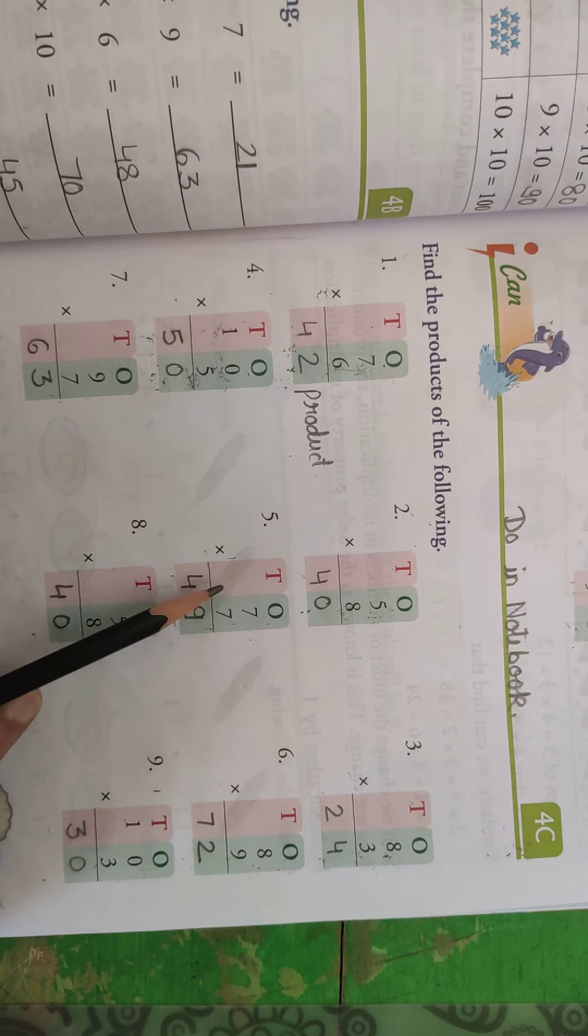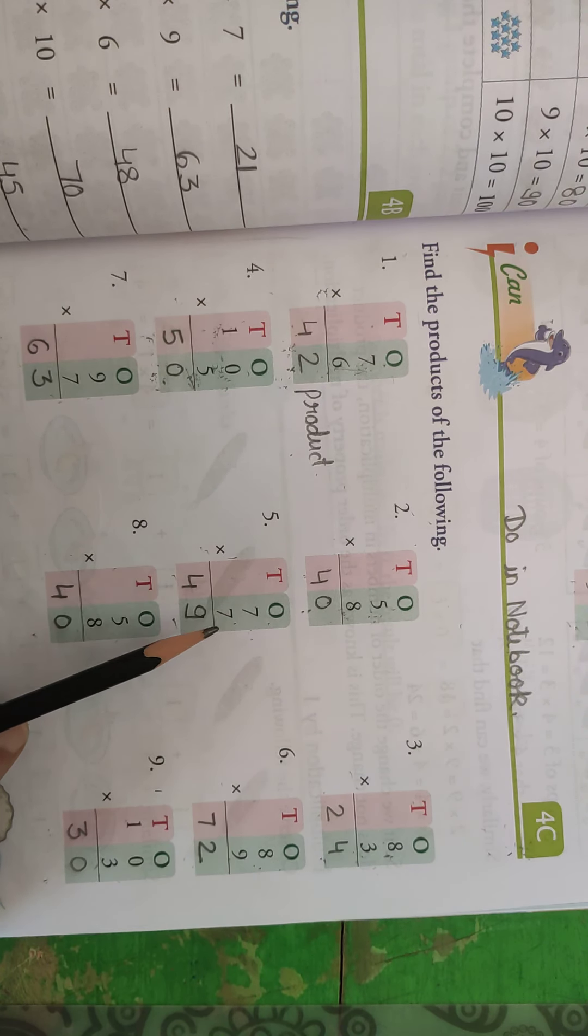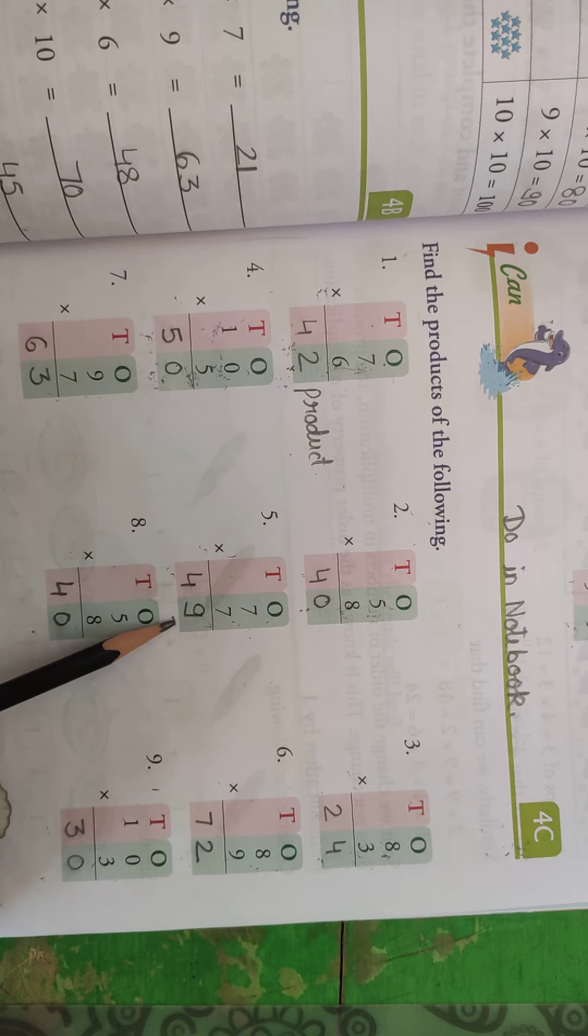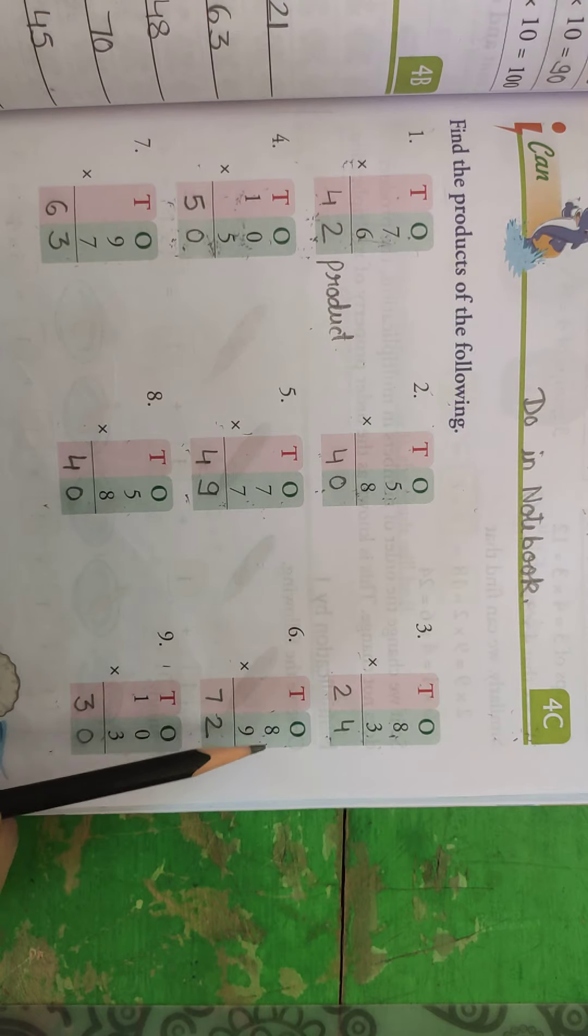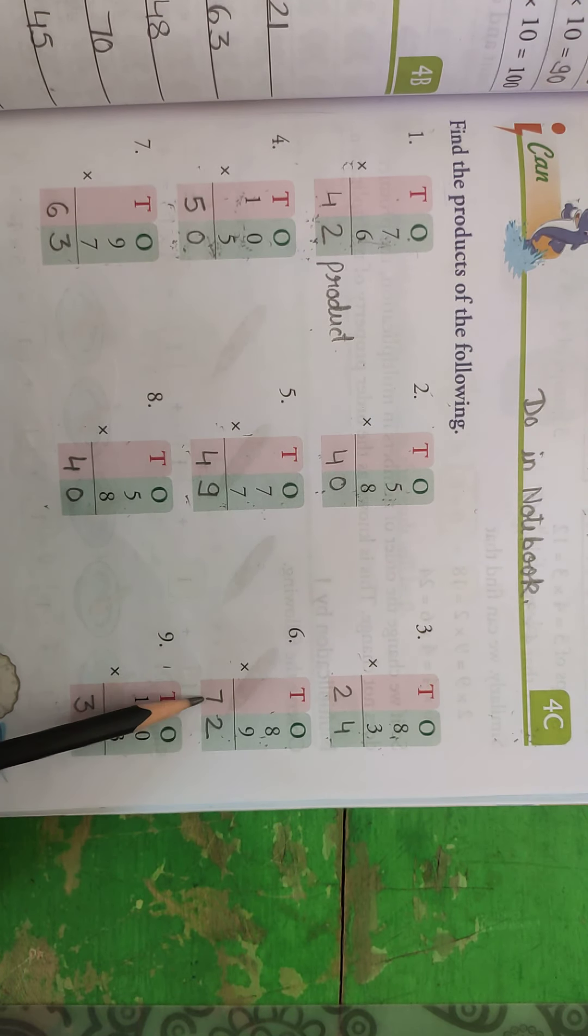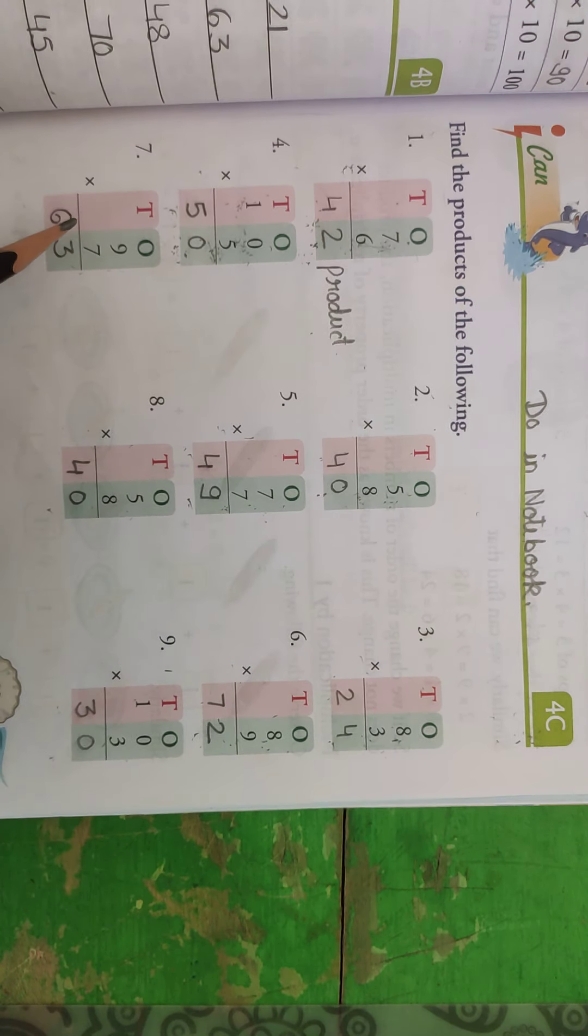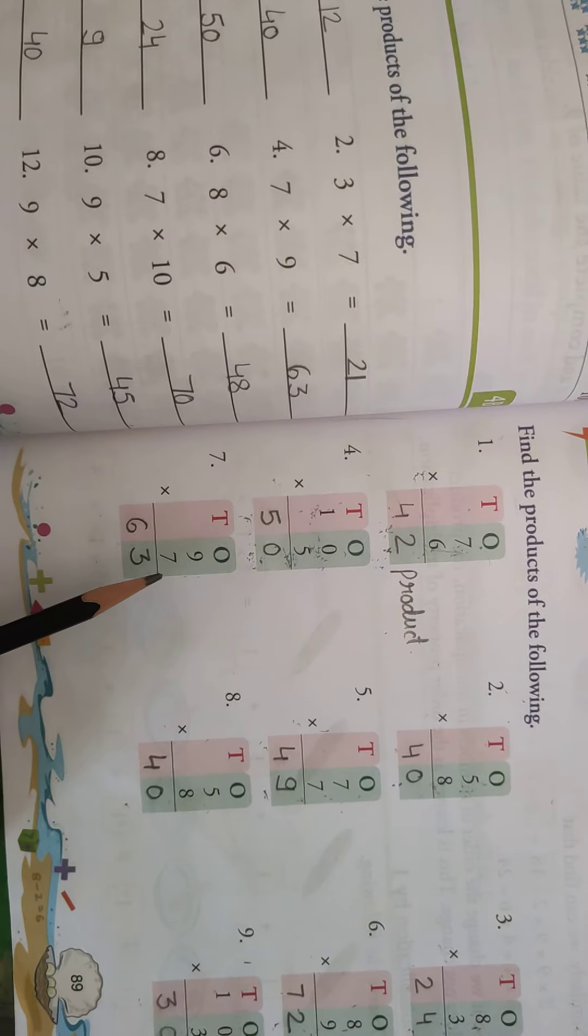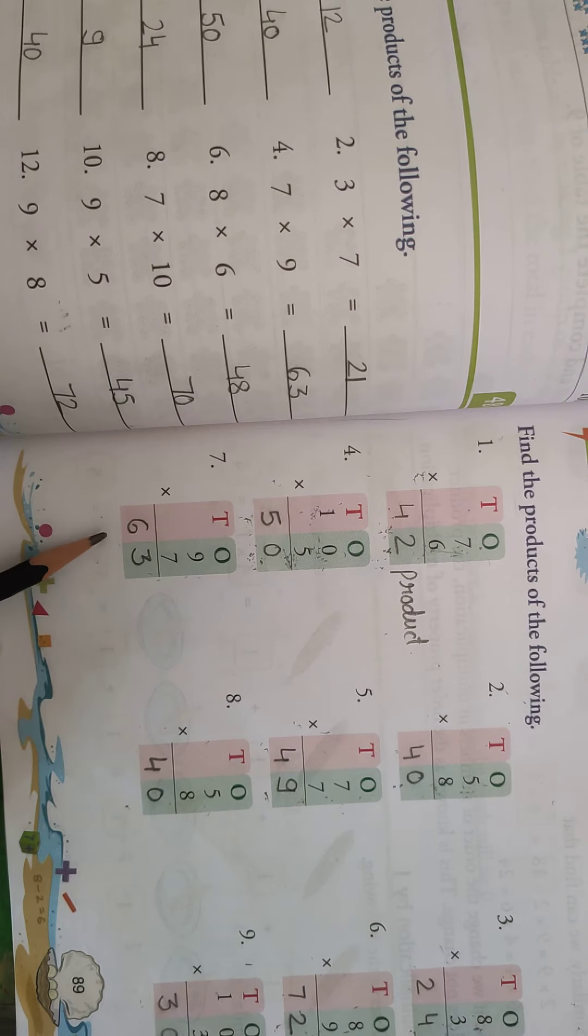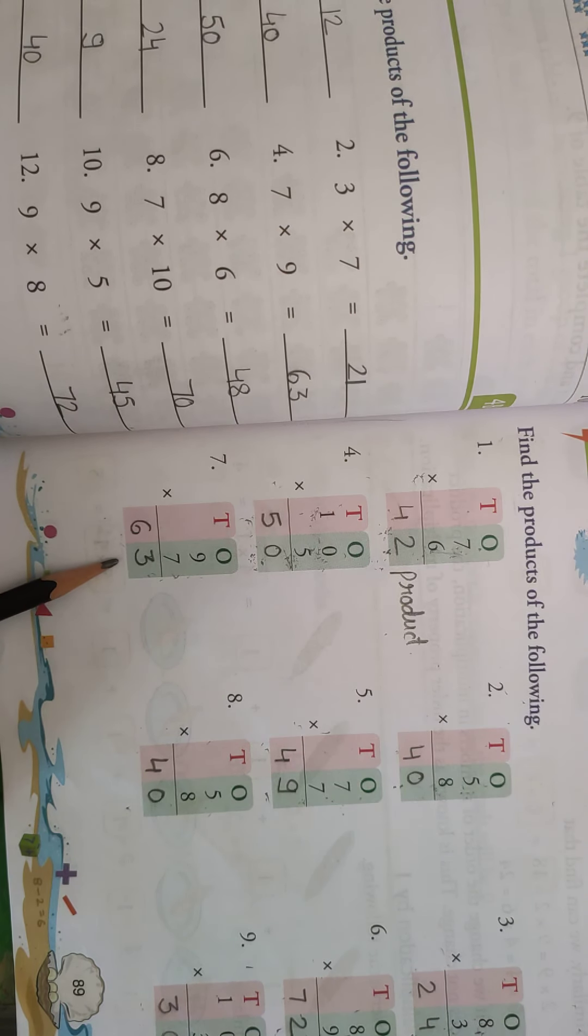Then tens once, again, 7 multiply by 7, so 7 7s a 49. Okay, then 8 multiply by 9. Okay, 8 multiply by 9, so 9 8s a 72. Then question number 7, 9 multiplied by 7, so 7 9s a 63.